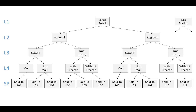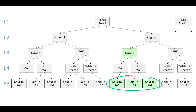Imagine that we create a sales order for sold-to 103. The sales order will pick up the entire hierarchy and put them as partners into the sales order header. So if anybody was trying to create a report for all sales orders that were luxury in the national area, they would just restrict on sales orders with this particular hierarchy node. If somebody wanted to give a special discount for all stores that are regional and luxury, they could either find every single sold-to associated with that area and do pricing manually, or they could do it on the hierarchy node and it'll apply to all of them below.